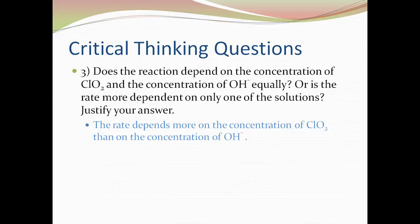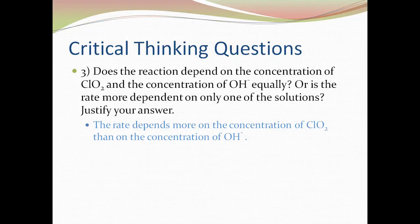For example, comparing experiments 1 and 2, we can see that when the concentration of ClO2 is doubled and the concentration of OH- is held constant, the rate increases by a factor of 4.